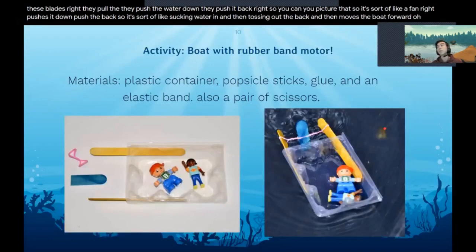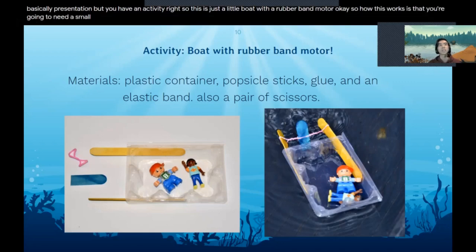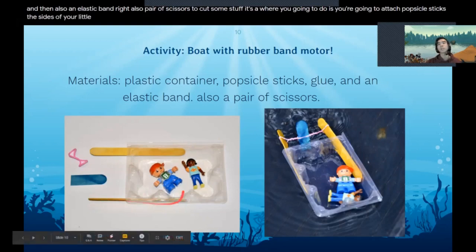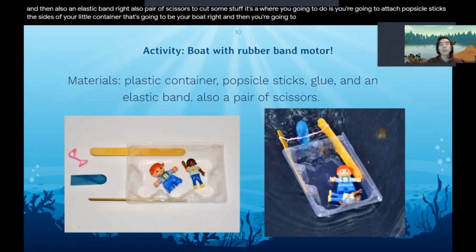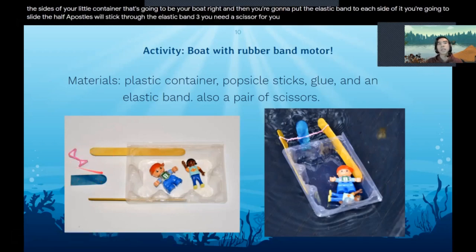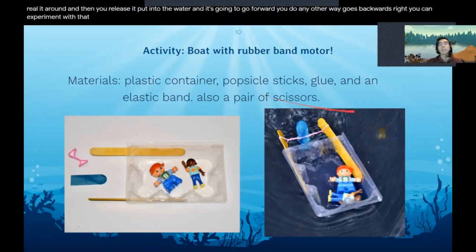That's basically the presentation, but we have an activity - a little boat with a rubber band motor. You're going to need a small plastic container that floats, a couple of popsicle sticks, glue or something to stick things to each other, an elastic band, and a pair of scissors. What you're going to do is attach popsicle sticks to the sides of your little container. That's going to be your boat. Then you're going to put the elastic band to each side of it. You're going to slide half a popsicle stick through the elastic band - that's where you're going to need the scissors, you're going to cut it in half - and then you just twirl it around and release it, put it into the water and it's going to go forward. Maybe if you do it the other way, it goes backwards. You can experiment with that.